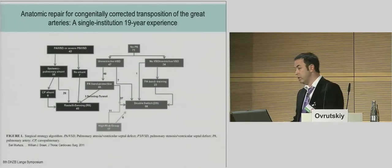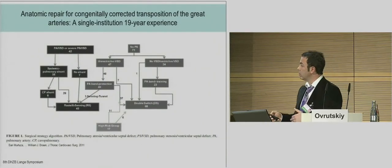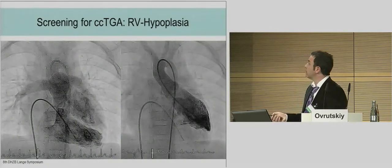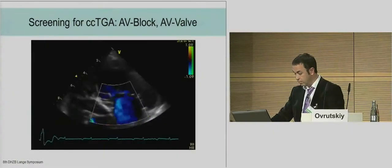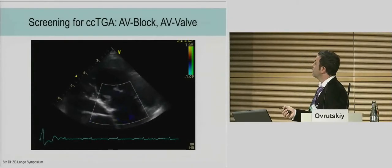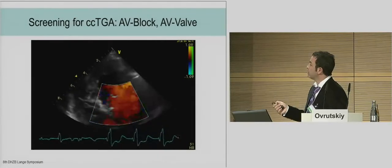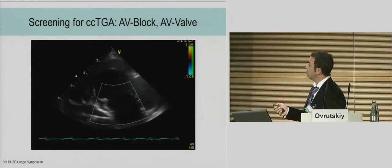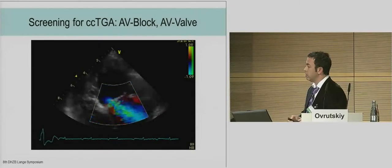This is our challenge and also our screening, because we not only provide data — we also think about the patients and observe them over time. In congenitally corrected transposition, we should think about possible hypoplasia of the right ventricle, aortic valve regurgitation on the right side, the tricuspid valve in the systemic position, and also AV block. As you can see here, without contractility of the right ventricle, there is no regurgitation from the tricuspid valve — it is only the atrium contracting.